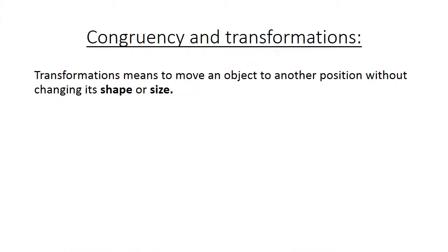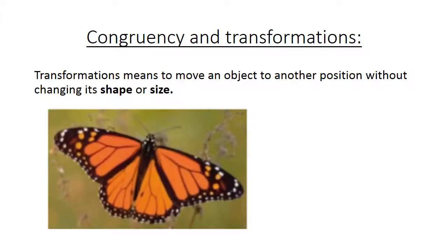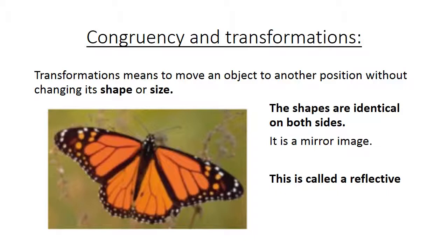Congruency and transformations. Transformation means to move an object to another position without changing its shape or size. The shapes are identical on both sides. It is a mirror image, and this is called reflective symmetry, not reflection. It is reflective symmetry.